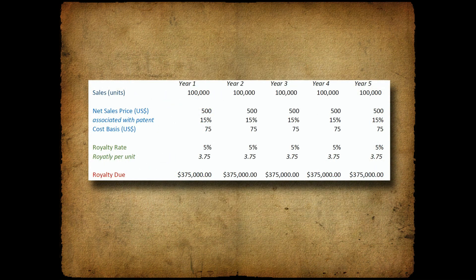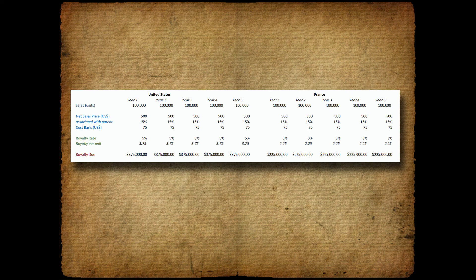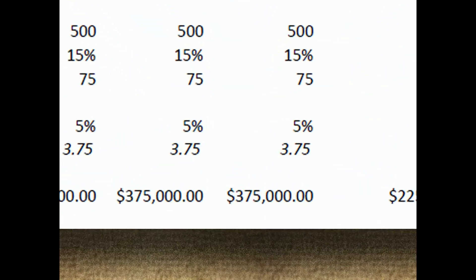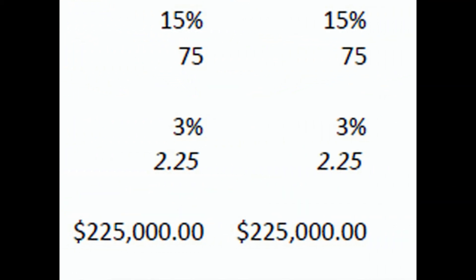Making the spreadsheet more complex, one typically estimates the sales per year for the life of the patent or the proposed agreement. Patent royalties can only be obtained in countries where there is a patent and an infringing act. In this example, I'll add a second country — France — to account for sales there. Note that I use a lower royalty rate for France, as that is typical: countries outside the US usually command a lower royalty rate because damage judgments are lower than in the US.